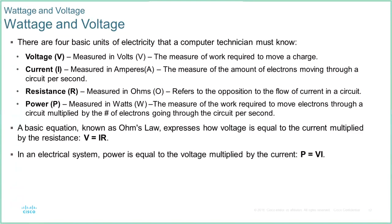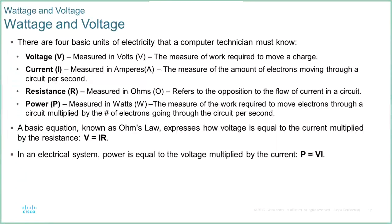Basic electrical theory: voltage measures the amount of work required to move a charge along the circuit. Current, which is measured in amperes, is the amount of electrons actually moving through the circuit per second. Resistance is the opposition to the flow of that current through the circuit. Power, which is watts, is the work required to move the electrons through the circuit multiplied by the electrons — basically, wattage is a ratio of voltage and current.